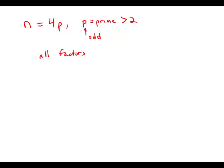First of all, there's 1. 1 is a factor of anything. p, the prime number, that's a factor. If it's divisible by 4, it's divisible by 2, so 2 is a factor. 2 times p is also a factor. 4 is a factor.